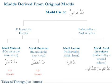Regarding length: whenever the original madd is followed by a hamza, whether it's in the same word or the next word, the count will be four to five long. If the original madd is followed by a sakin letter or a letter with a shadda, then it must be recited as six counts long. And if the original madd is followed by a derived sukun, then you have the option of reciting it as two, four, or six counts.